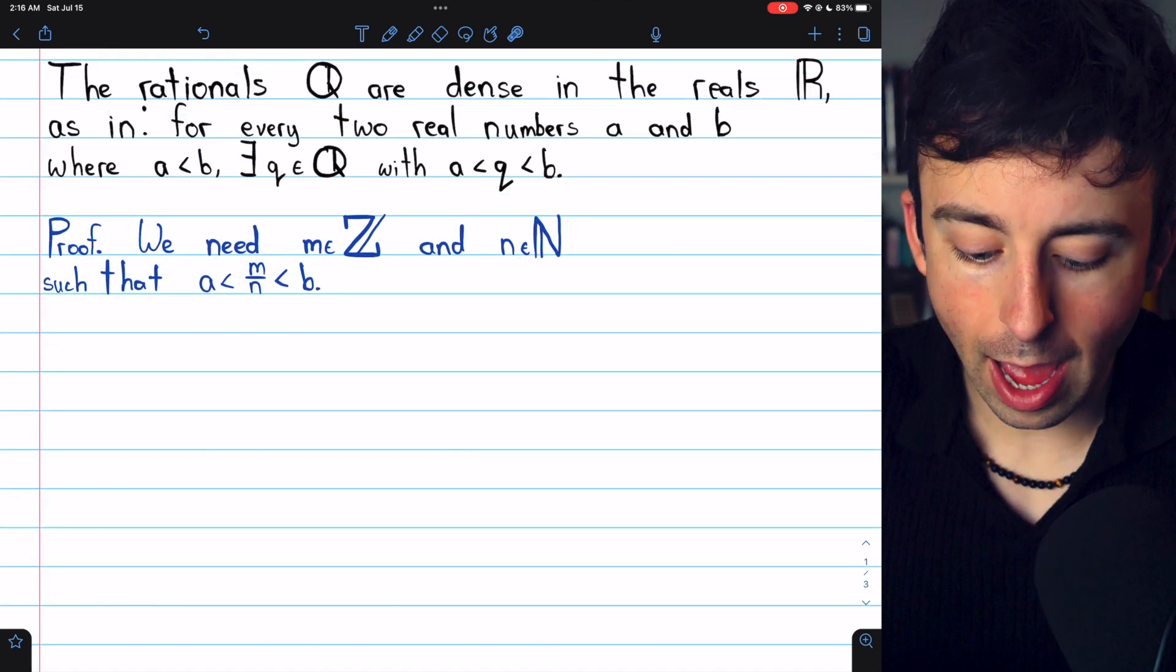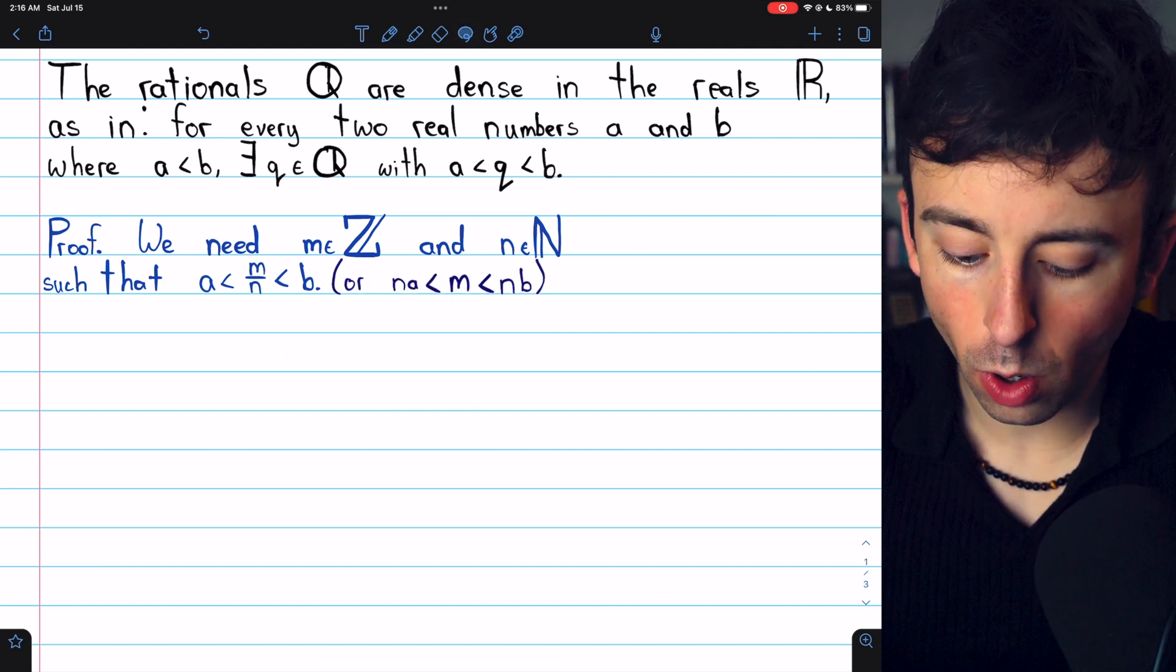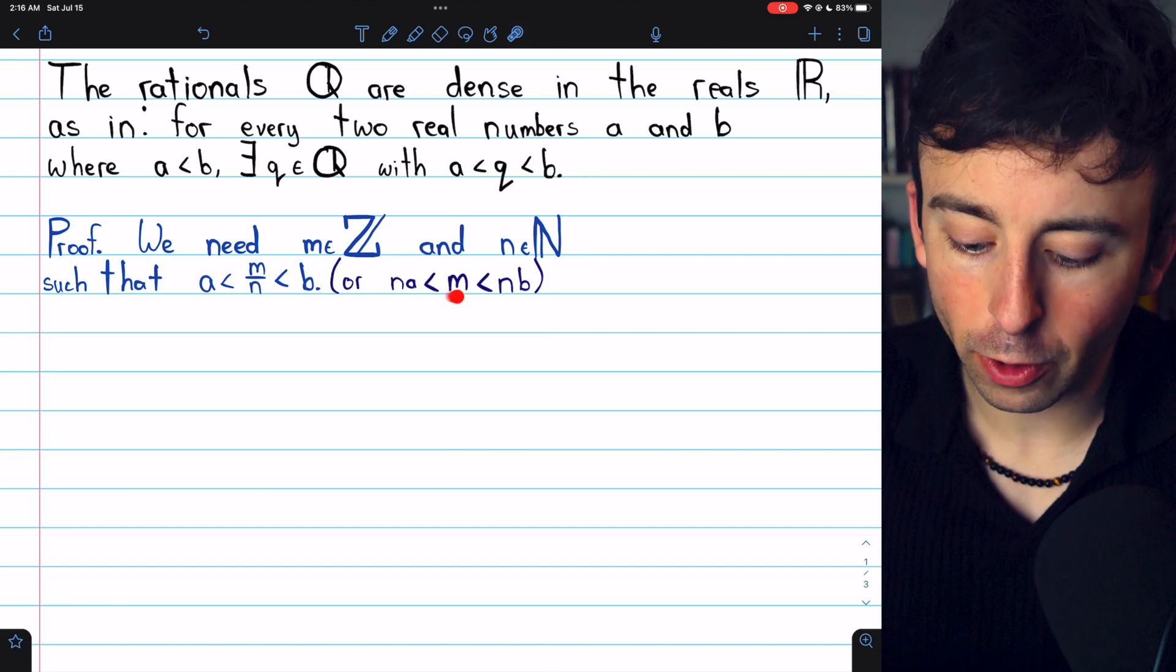Note that this inequality, M over N is between A and B, is equivalent to this inequality. If we multiply everything by N, we have that the numerator, M, is between NA and NB.